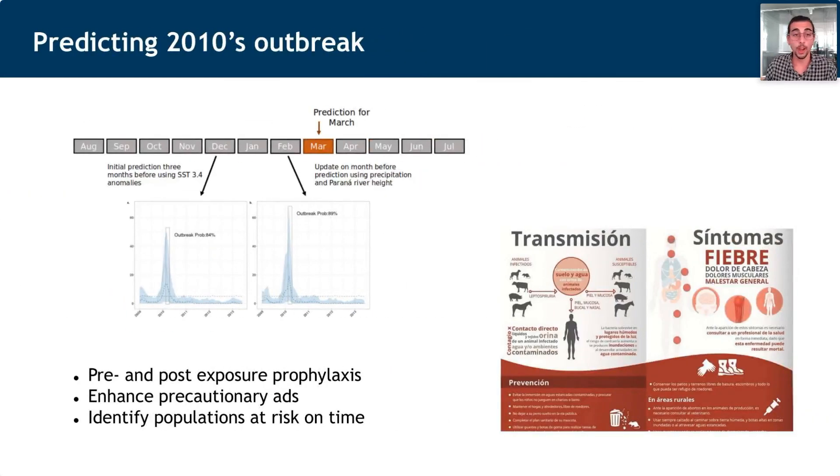This is an example of how this two-stage staggered approach might work. This is calculating the outbreak probability for March 2010. We had a first prediction done with the Niño Index 3.4 in December 2009, and we see that the outbreak probability is 84%. Then a second stage prediction with local climate in February 2010 gave us an outbreak probability of 89%. If I was a public health official, I would be deploying intervention strategies to prevent these outbreaks from happening, for example by deploying pre-exposure prophylaxis or identifying populations at risk, like people living in slums or close to flood-prone areas.